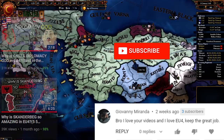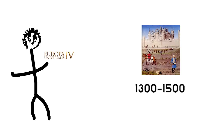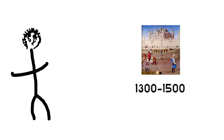Paradox have designed EU4 so that it fits into the late medieval period between 1300 and 1500. Therefore, Paradox needed to choose a starting date in this time period that is exciting to start in, which leaves only a few dates to choose from.